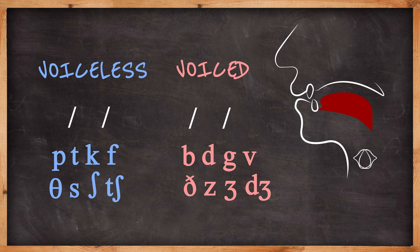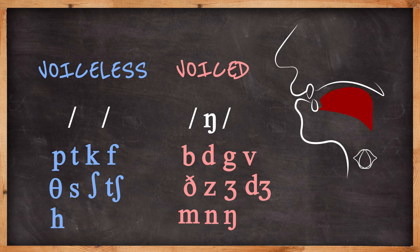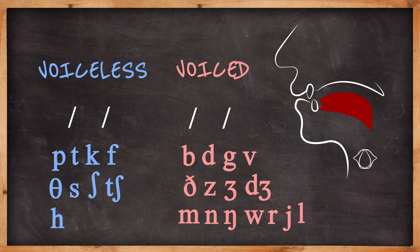Others do not come in pairs. H has no voiced partner in English, and m, n, ng, w, r, y, l are all voiced without voiceless partners.